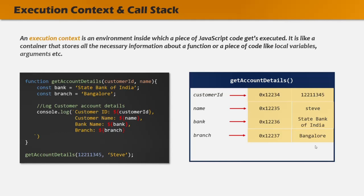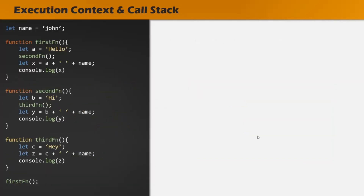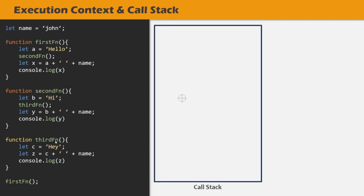Let's understand how the execution context gets executed in the call stack. Here I have written a simple JavaScript code. First we are declaring a global variable called name, and then we also have global functions: firstFunction, secondFunction, and thirdFunction. This name variable and these three functions are declared in the global scope — they are not present inside any other function or code block. When we run this JavaScript code in the browser, the browser will compile it into machine code, and after compilation, the JavaScript engine will start executing it. We will have a call stack inside which each execution context will be executed.